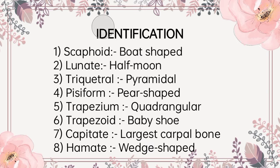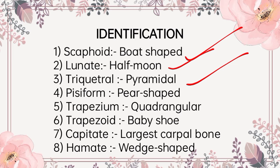Identification: scaphoid bone is boat-shaped and has a tubercle on its lateral side. Lunate is a half-moon shaped. Triquetrum is pyramidal in shape and has an isolated oval facet on the distal part of the palmar surface.